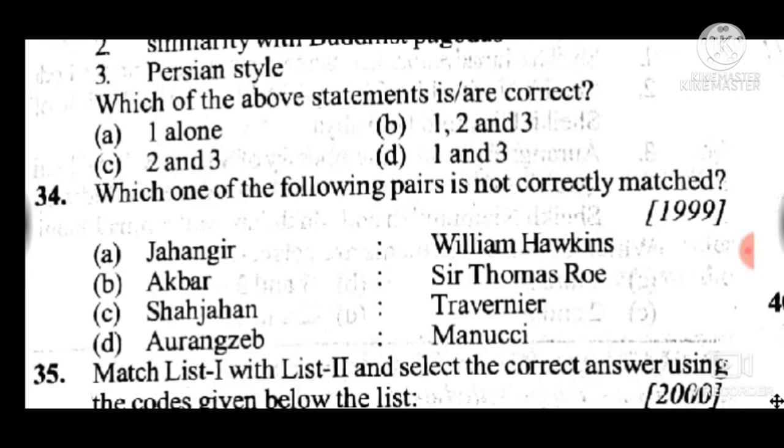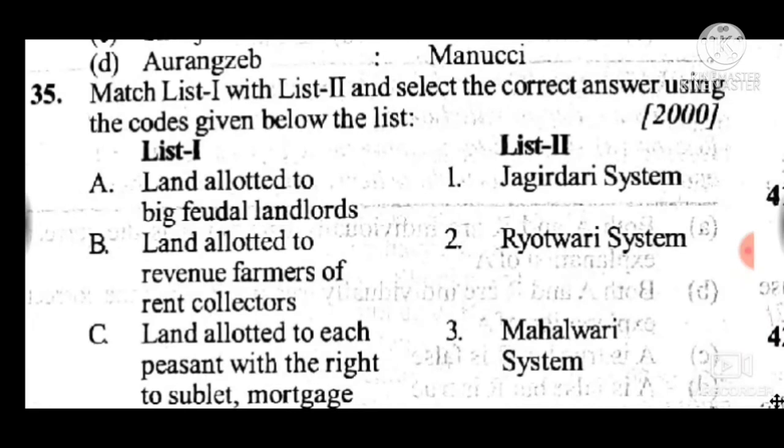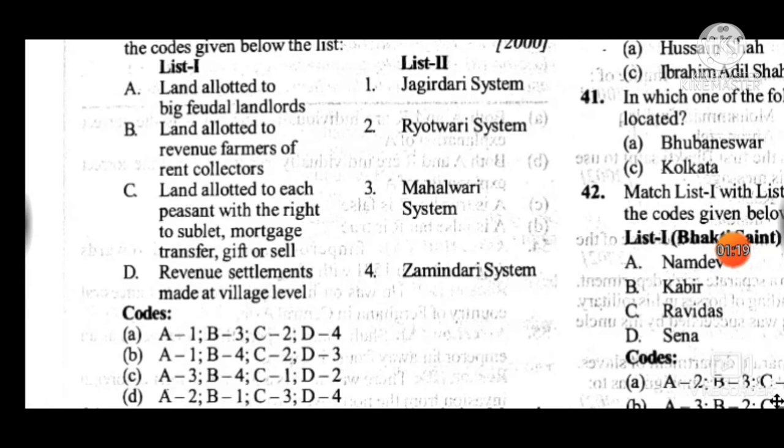Question 35 is a match-list question. Answer is B: A relates to 1, B relates to 4, C relates to 2nd, and D relates to 3rd.